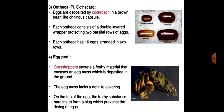In cockroaches, eggs of brown color are deposited in a bean-like capsule called the ootheca. Each ootheca has parallel rows of eggs with a double-layer protective covering or wrapper. Each ootheca contains 16 eggs arranged in two rows.